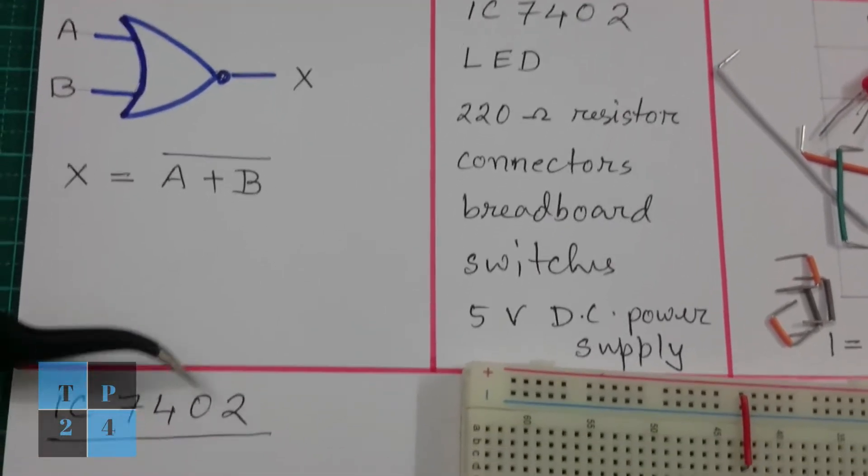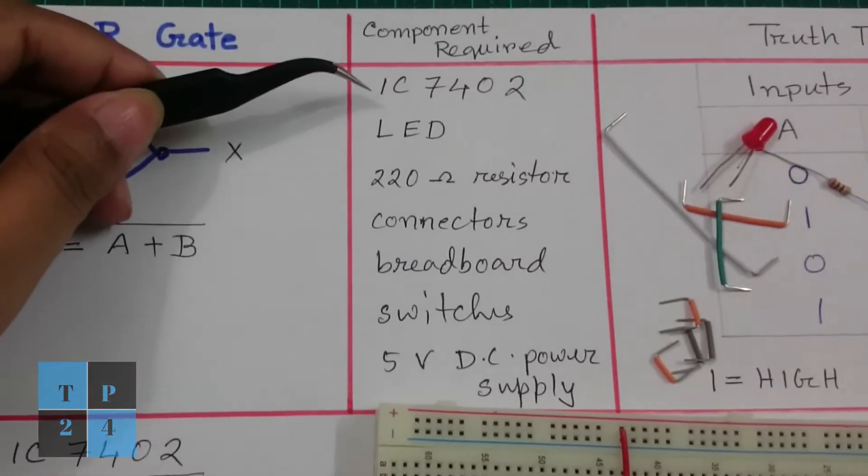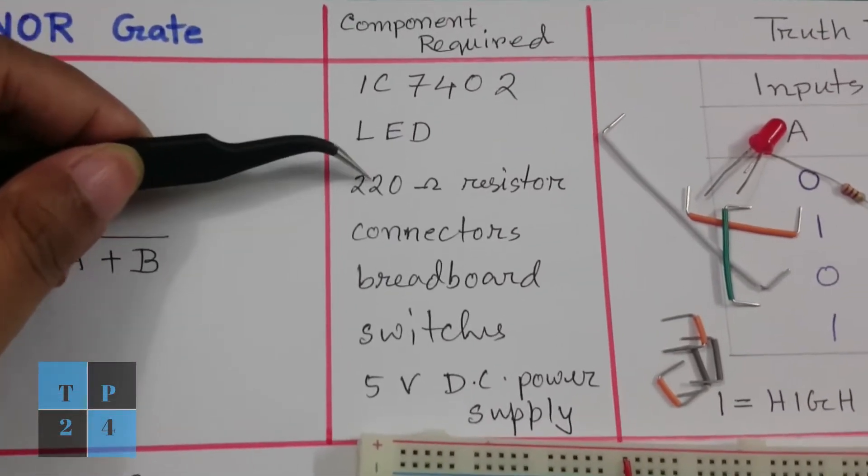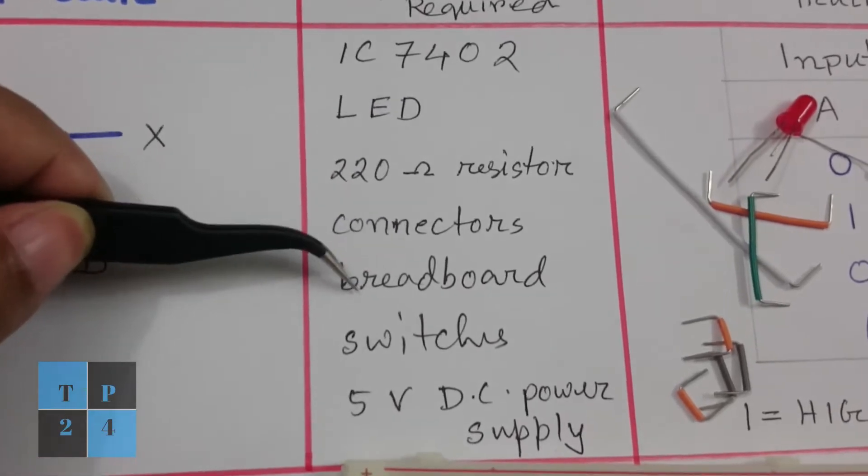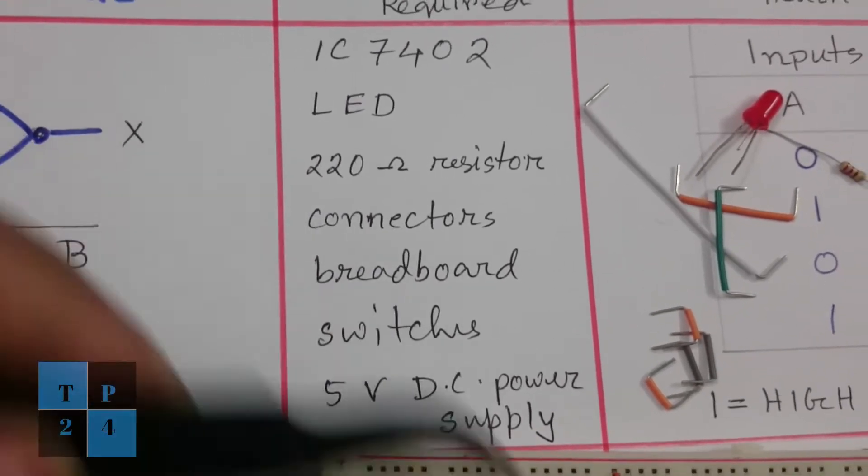To explain the NOR gate, I will use the IC 7402 along with an LED, 220 ohm resistor, connectors, breadboard, switches, and 5 volt DC power supply.